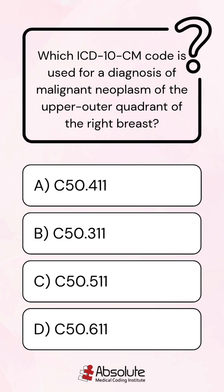Which ICD-10-CM code is used for a diagnosis of malignant neoplasm of the upper outer quadrant of the right breast?